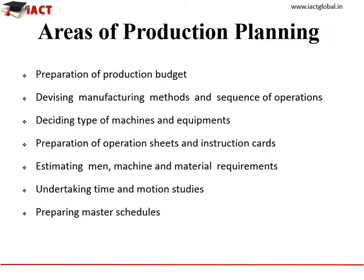The areas of Production Planning and Control include: preparation of production budget, devising manufacturing methods and sequence of operations, deciding type of machines and equipment, preparation of operations sheets and instruction cards, estimating men, machine and material requirements, undertaking time and motion studies, and preparing master schedules.